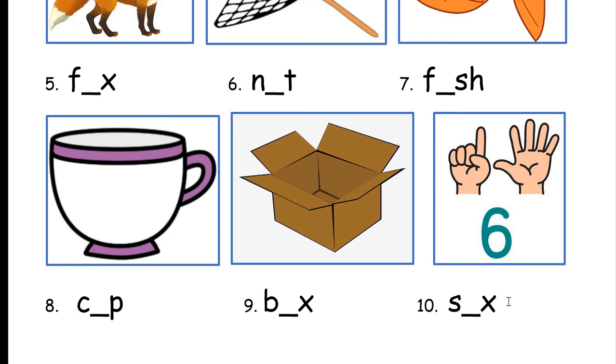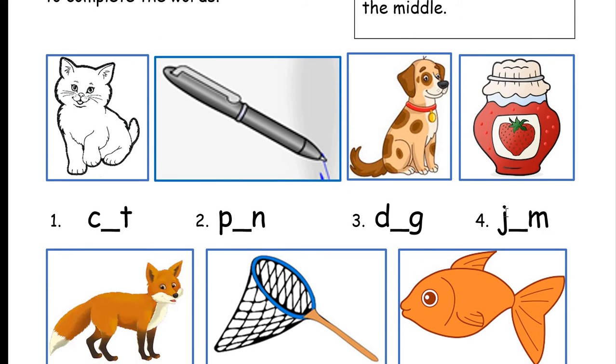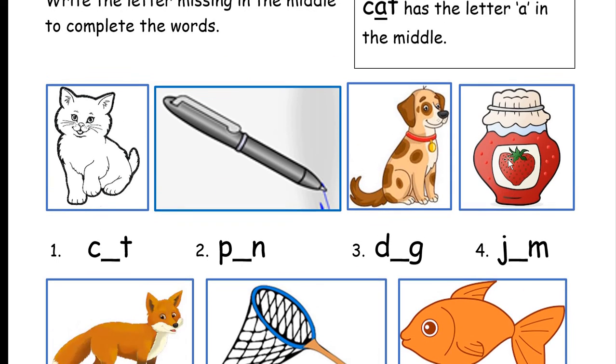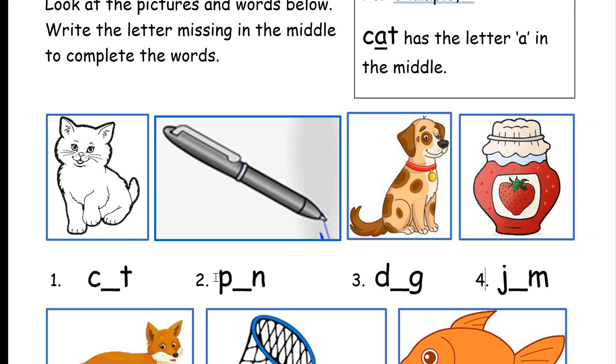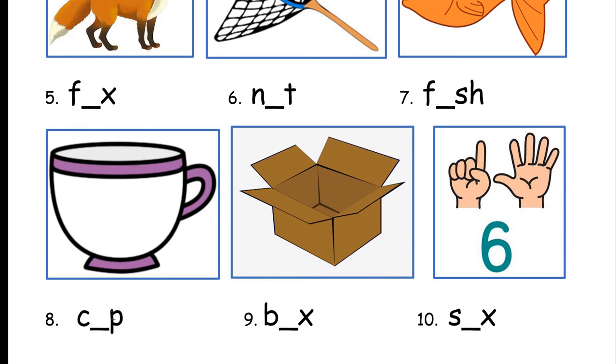Maybe I should have put that as number six, but that's all right. So, I'll read them once again, and sorry for that little mistake there. We had two number threes. That's supposed to be number four underneath the jam, of course. Okay, so number one, cat. Number two, pen. Number three, dog. Number four, jam. Number five, fox. Number six, net. Number seven, fish. Number eight, cup. Number nine, box. And number ten, six.